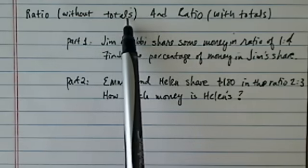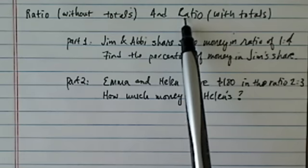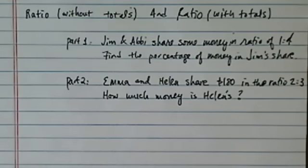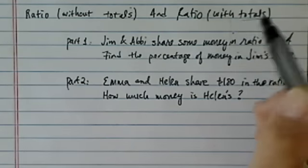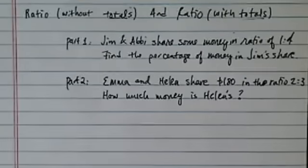First part is without dealing with the total, and second part is with dealing with the total. As we go through the problem, it will become more clear what we mean by ratios with or without totals.